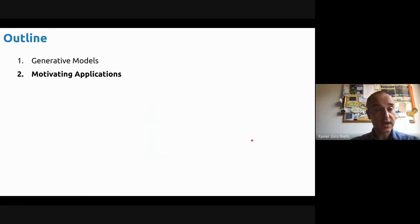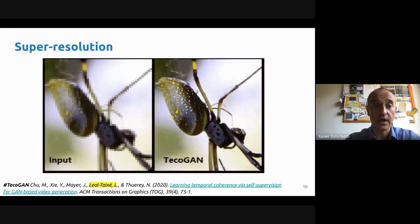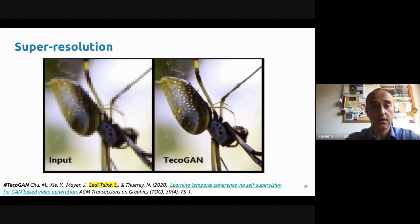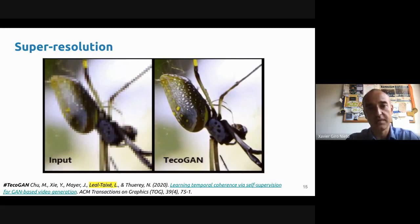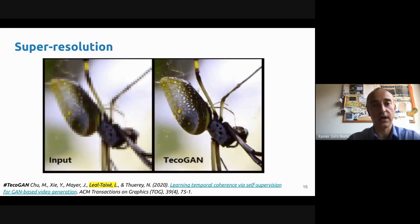Let's look at some motivating applications. One application could be super resolution. Imagine you have an image or video in low spatial resolution — that's the input on the left. On the right, you have the output of a GAN-based model that has interpolated the missing pixels in a much better way than linear interpolation would do. There's a lot of detail that has been added, based on a previous learning process. This work was actually co-authored by Laura Leal, who was a former student from our university at UPC.